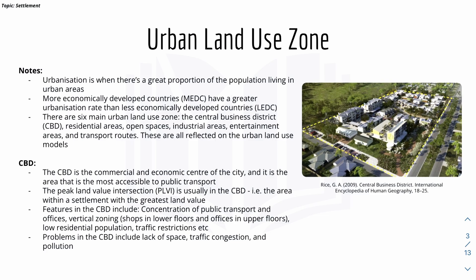There are six main urban land use zones: the central business district (CBD), residential areas, open spaces, industrial areas, entertainment areas, and transport routes. The CBD is the commercial and economic center of the city and the most accessible to public transport. The most expensive part of a city is called the PLVI, or Peak Land Value Intersection, and it is usually located in the CBD.